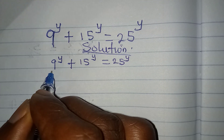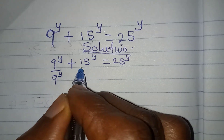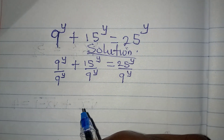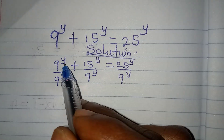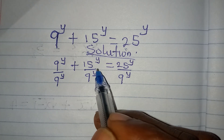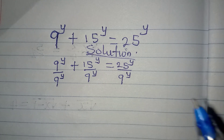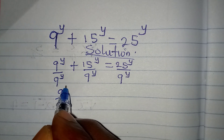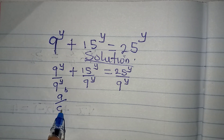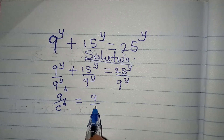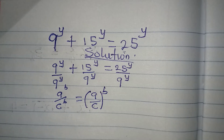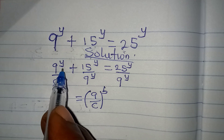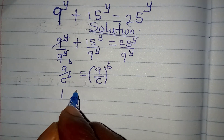Let me divide all through by 9 to the power of y. There's a law that says if you have the same base, you can combine the powers if the powers are the same. Specifically, a to the power of b over c to the power of b is the same as (a over c) to the power of b. Applying this, the first term cancels to 1.